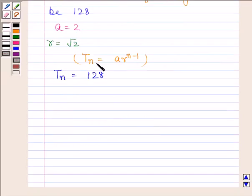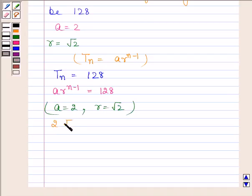Tn is equal to A into R to the power n minus 1. So A into R to the power n minus 1 is equal to 128. We know that A is equal to 2 and R is equal to root 2. By substituting the values of A and R, we get 2 into root 2 to the power n minus 1.